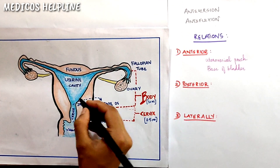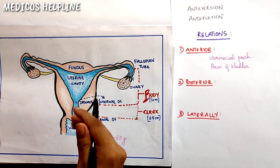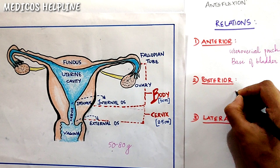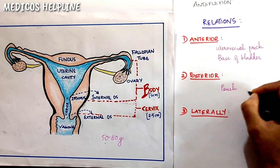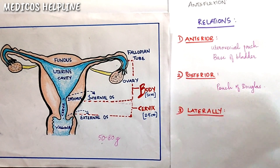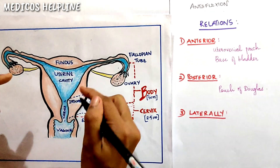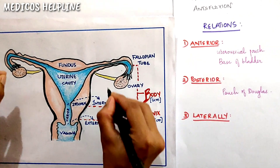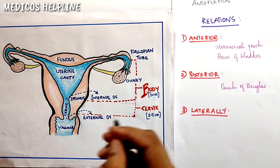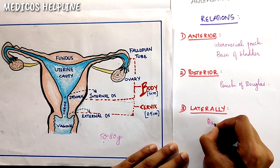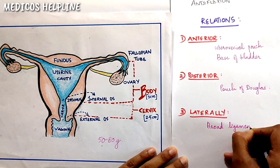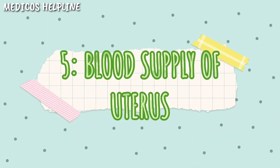Posteriorly, behind the uterus it is covered by the peritoneum and forms the anterior wall of the pouch of Douglas. Laterally, on either side of the uterus, we have the double folds of the peritoneum of the broad ligament.